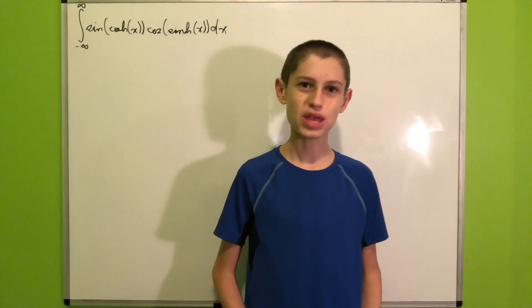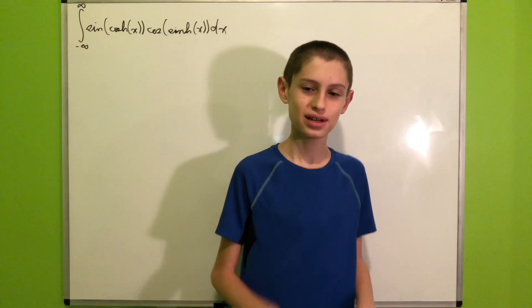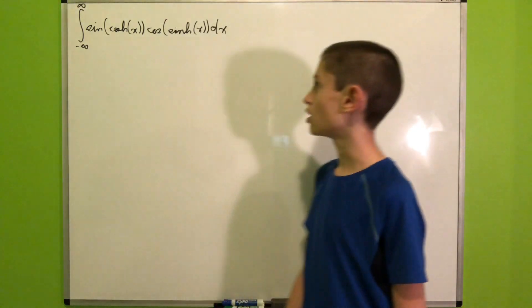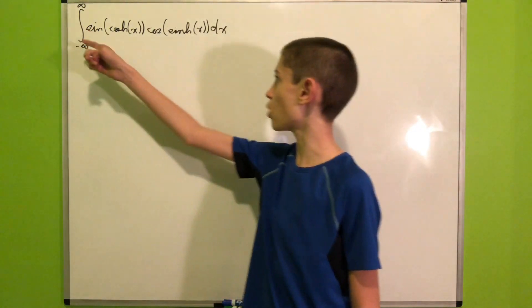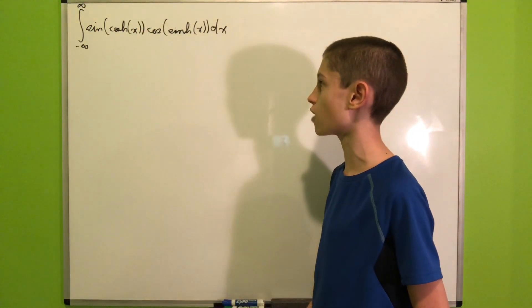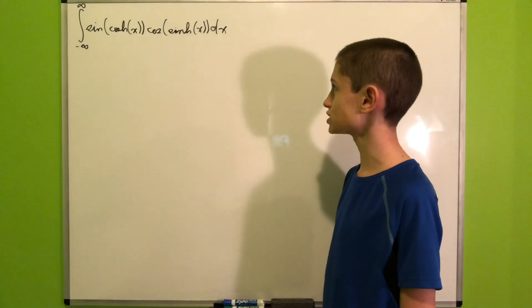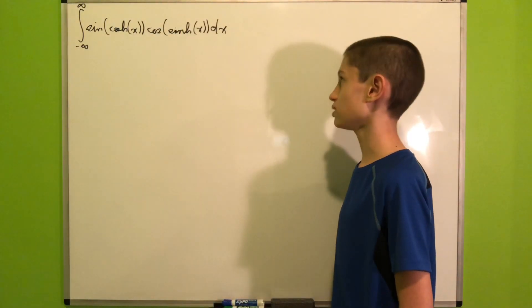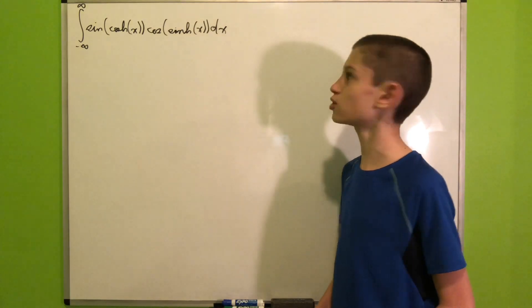Hi everyone! Recently I came across a blog which had quite a few interesting integrals. I'll leave a link in the description. One of those integrals is the one we're evaluating today — the integral from negative infinity to infinity of sine of cosh(x) times cosine of sinh(x) dx. Without further ado, let's get started because this is going to be quite an arduous ride.